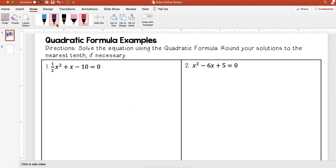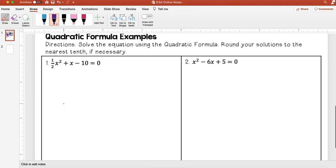So let's get to some more examples using this formula. First one I have one-half x squared plus x minus 10 equals 0.